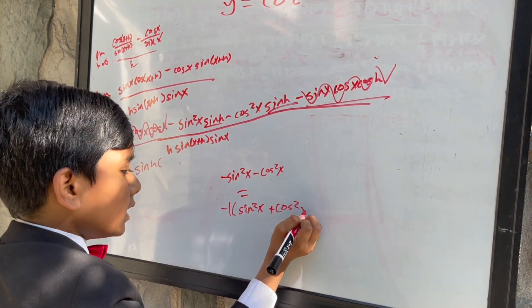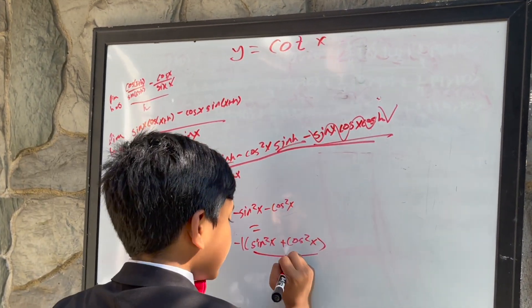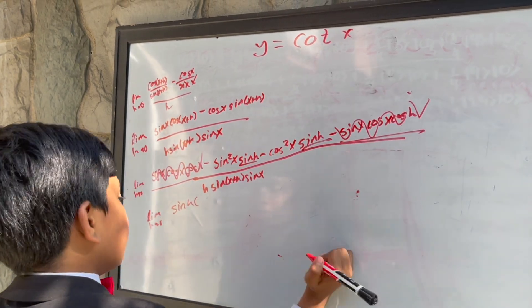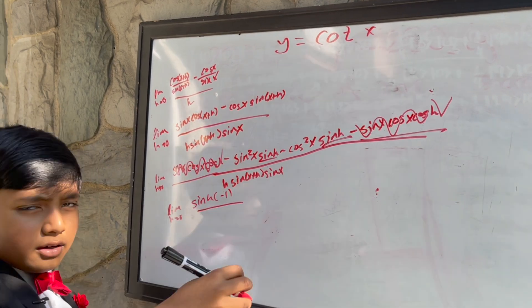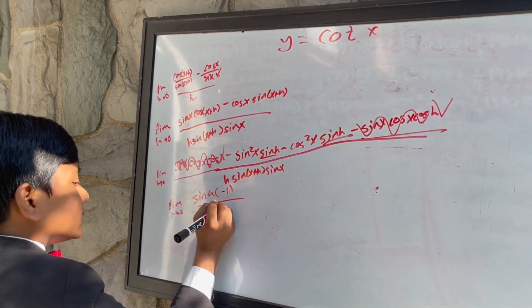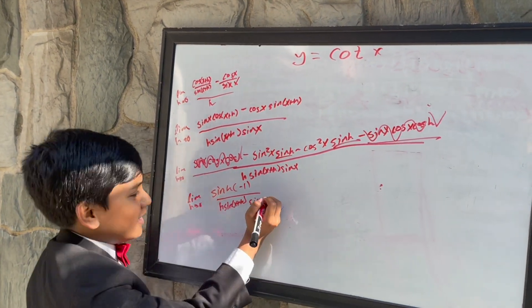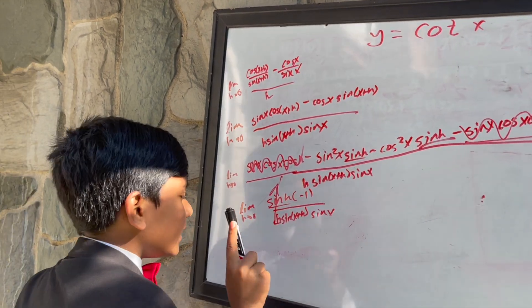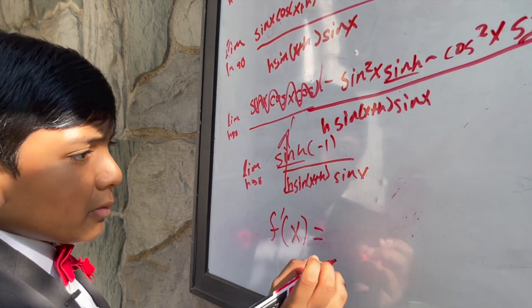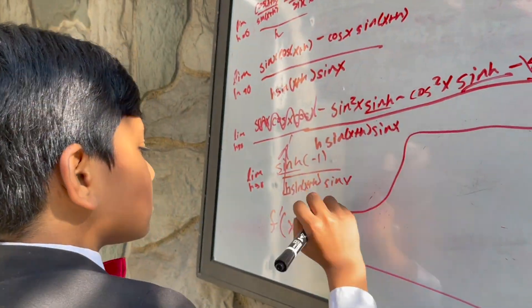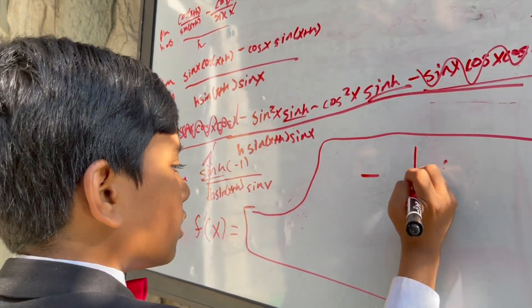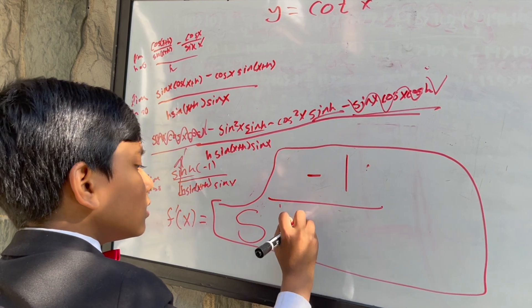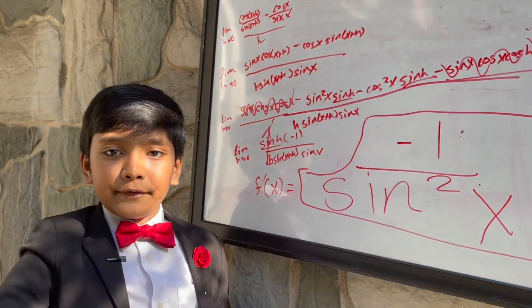Now what does that mean? Well, sine squared x plus cosine squared x is actually equivalent to one, so this is negative one. That means we're simply taking negative one divided by h times sine(x+h) times sine x. Sine of h over h, as h approaches zero, approaches one. So that gives us f prime of x equals negative one over sine squared of x. All right, that's it.